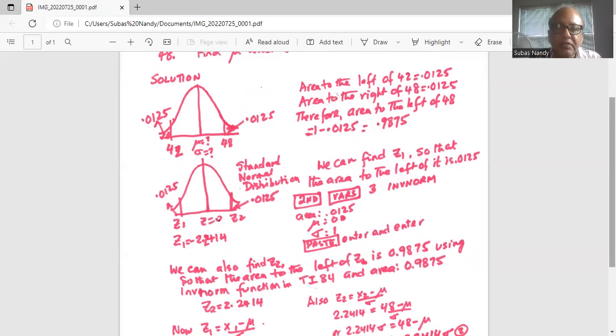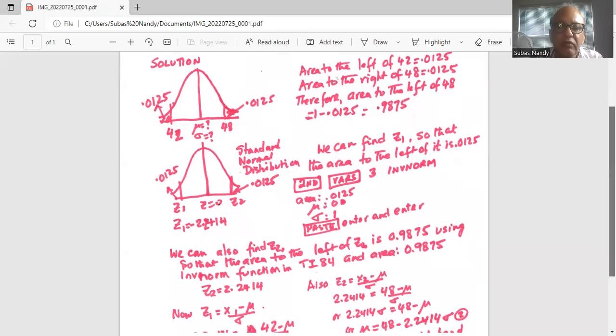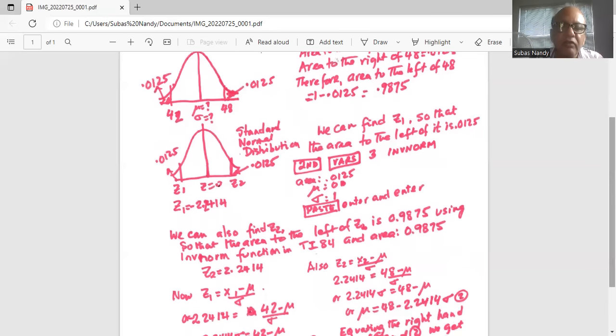Now we will express Z2 in terms of X and mu and sigma. Z2 is expressed in terms of X2. So 2.2414 equals X2, which is 48, minus mu, which is not known, divided by sigma. Multiply by sigma on both sides, so we get 2.2414 times sigma equals 48 minus mu, or we can move the mu to the left hand side of the equation. So mu equals 48 minus 2.2414 sigma.